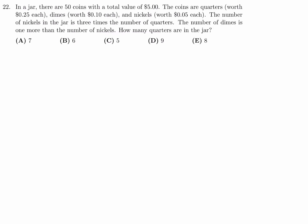In a jar, there are 50 coins with a total value of $5. The coins are quarters, dimes, nickels. The number of nickels in the jar is 3 times the number of quarters. The number of dimes in the jar is 1 more than the number of nickels. How many quarters are in the jar?